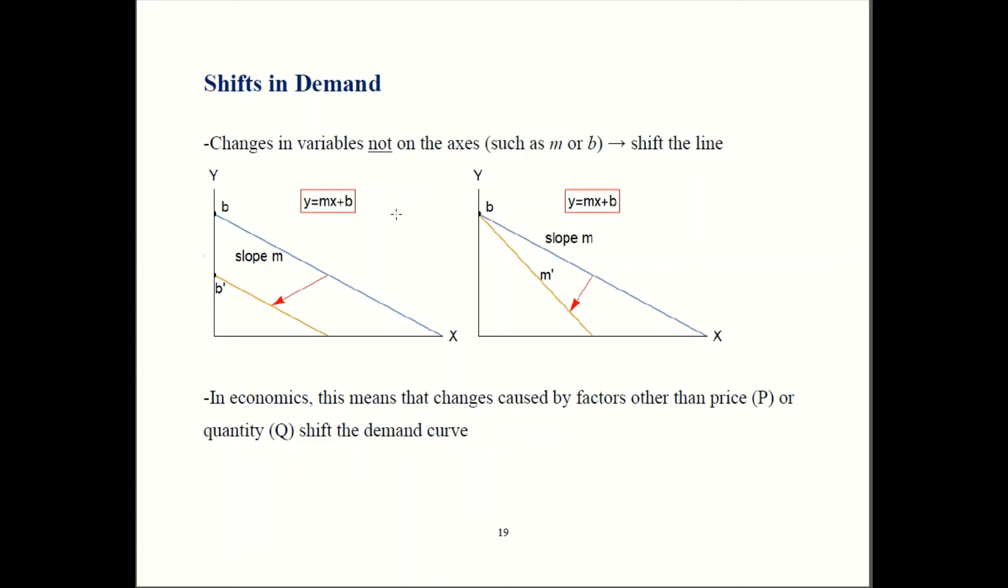In my first graph here, I changed b. I lowered b to b prime. That shifts my intercept down and that's going to drag down my entire curve. In my second graph, I changed the slope m. I made it steeper. So that caused the curve to shift - it caused it to pivot around this point b.